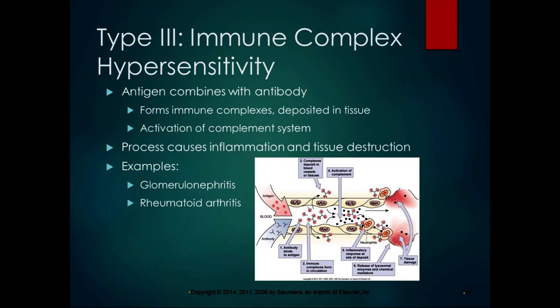Type 3 is the immune complex hypersensitivity, where the antigen combines with the antibody forming a complex which is then deposited into tissues, often in blood vessel walls, and also activates the complement system causing inflammation and tissue destruction. Many diseases are now thought to be caused by immune complexes, including glomerulonephritis and rheumatoid arthritis. In glomerulonephritis — great word — the glomeruli in the kidney tubules are affected. We'll talk more about that when we discuss the kidneys next quarter. In rheumatoid arthritis, it's the joints that are affected.